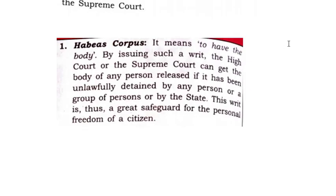The first writ is habeas corpus. It means 'to have the body.' By issuing such a writ, the High Court or the Supreme Court can get the body of any person released if they have been unlawfully detained by any person, a group of persons, or by the state. This writ is thus a great safeguard for the personal freedom of a citizen. If any person is detained, the Supreme Court can order this writ and the person has to be brought in front of the Supreme Court.